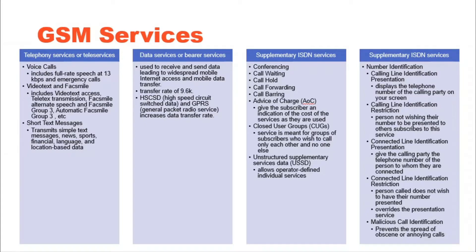Before GSM, European countries used different cellular standards throughout the continent, and it was not possible for a customer to use a single subscriber unit throughout Europe. GSM was originally developed to serve as the pan-European cellular service and promised a wide range of network services through the use of ISDN.